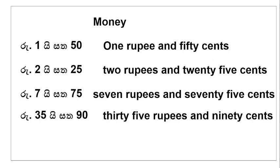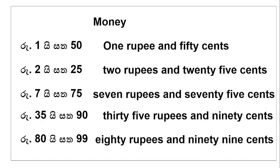Thirty-five rupees and ninety cents — rupee al tispa hai sata anu. Eighty rupees and ninety-nine cents — rupee al asurvai sata anu. Ok let's read again: one rupee and fifty cents, two rupees and twenty-five cents, seven rupees and seventy-five cents, thirty-five rupees and ninety cents, eighty rupees and ninety-nine cents.